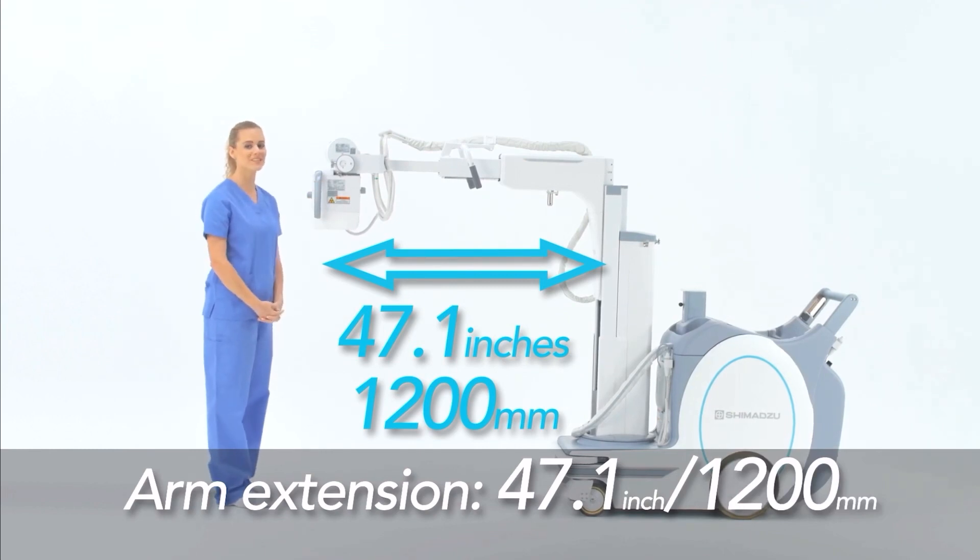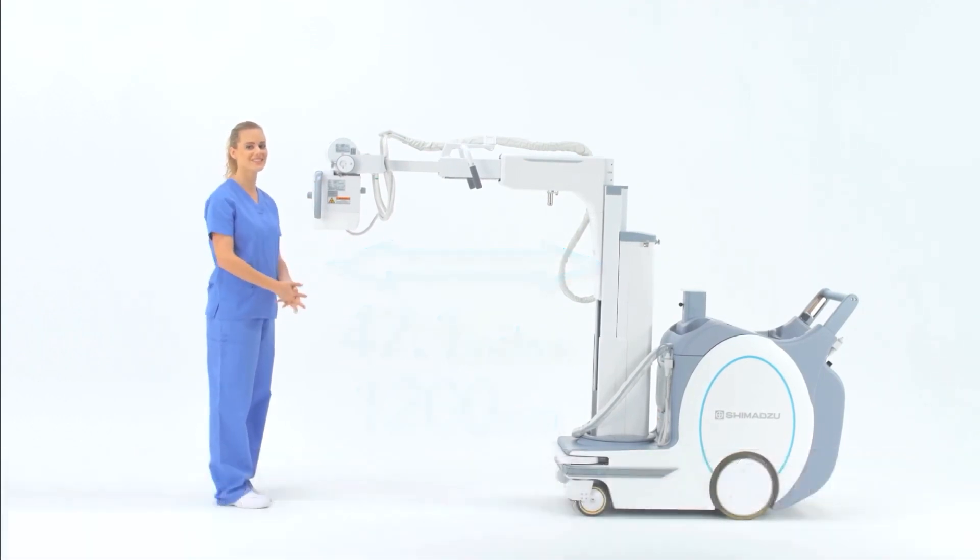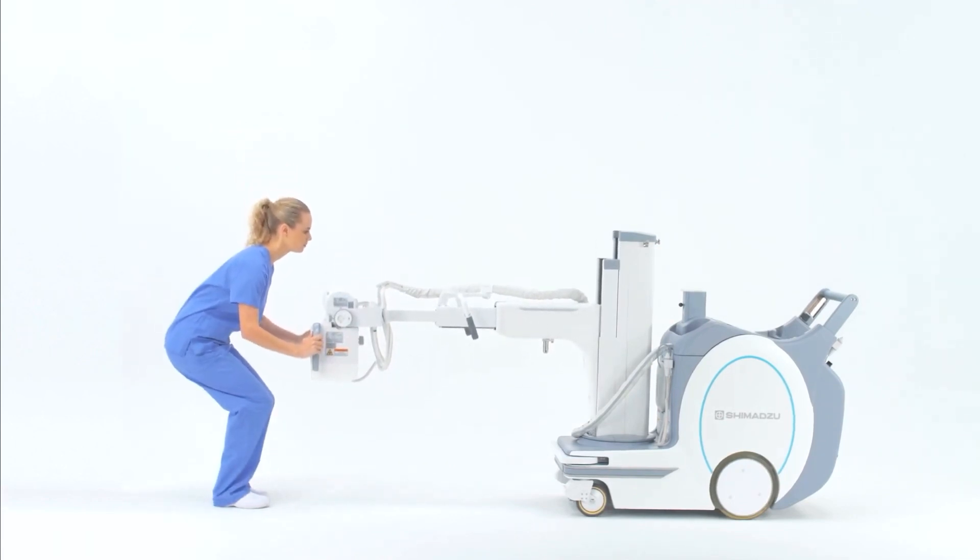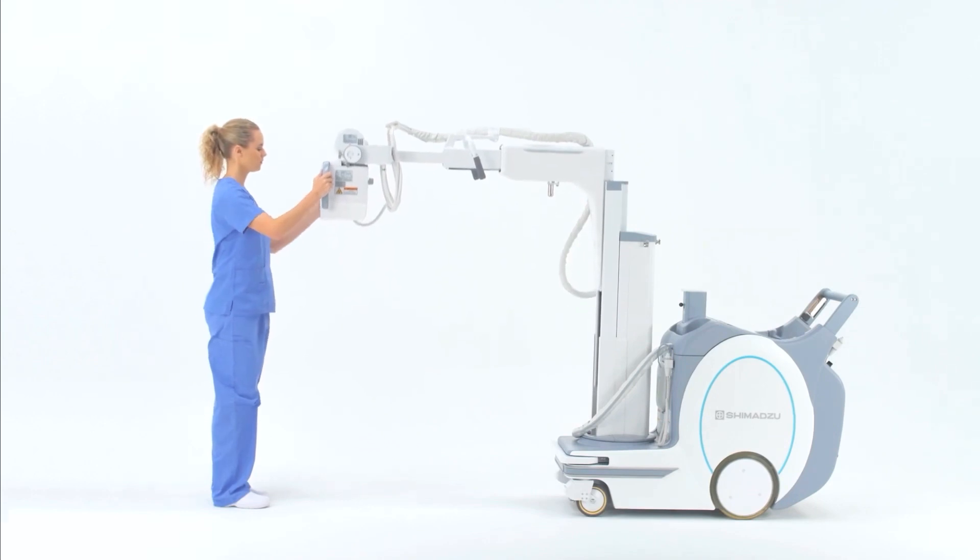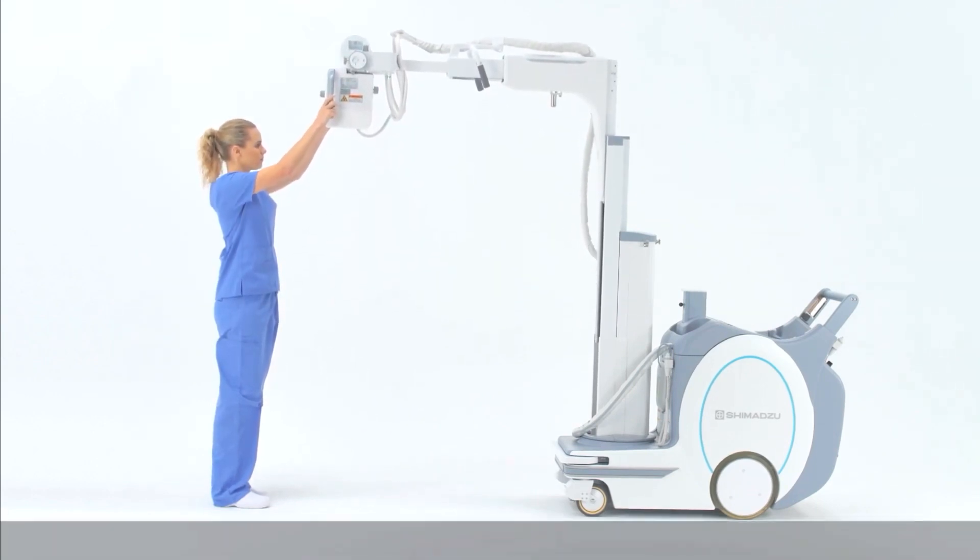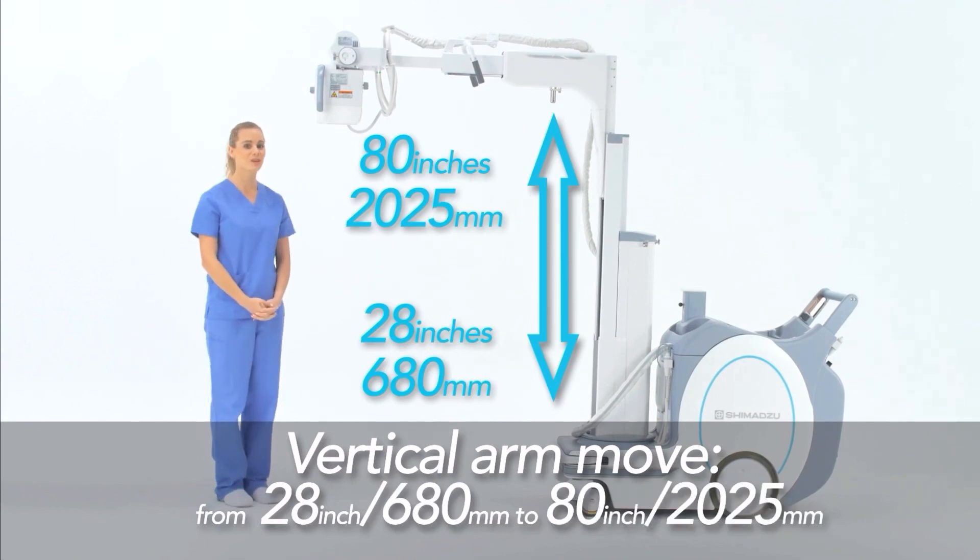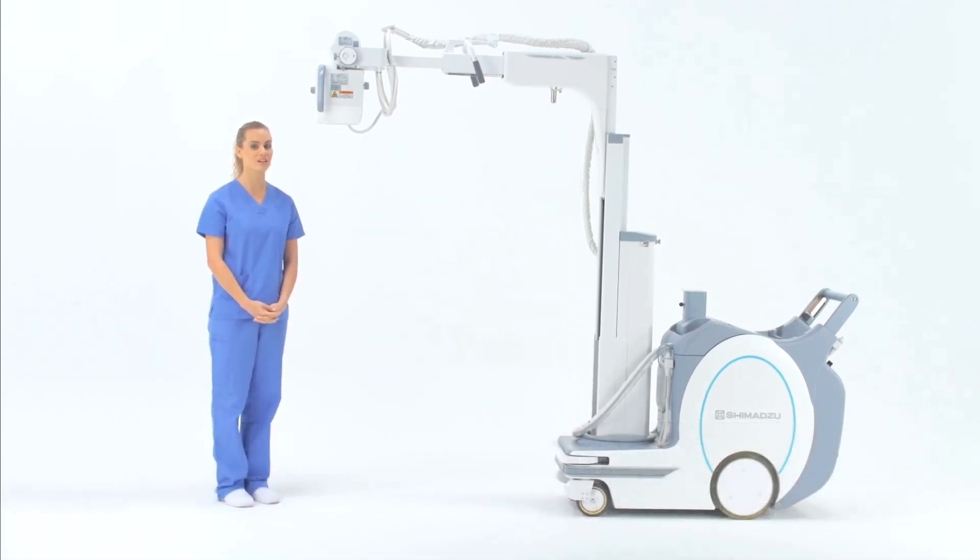The arm is capable of extending up to 47 inches. The X-ray tube can move vertically from 28 inches up to 80 inches off of the floor, which allows positioning to be completed in one simple step.